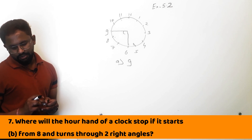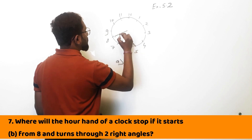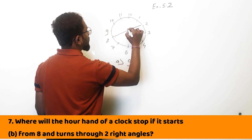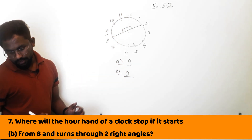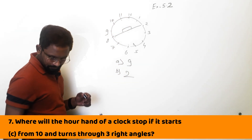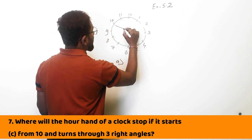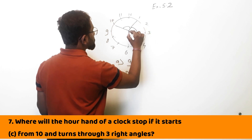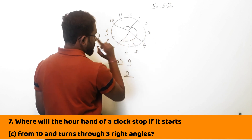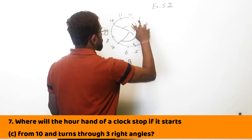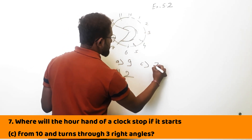B part: from 8 and turns through 2 right angles. It is at 8 and going 2 right angles, so the answer will be 2. C part: from 10 and turns through 3 right angles. At 10 — 1 right angle, 2 right angles, 3 right angles — so it will be at 7.